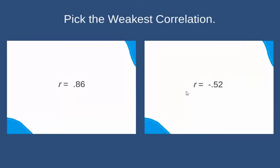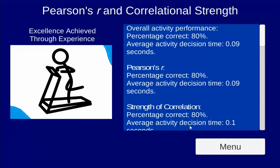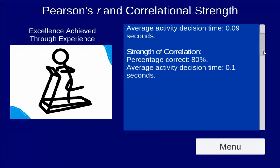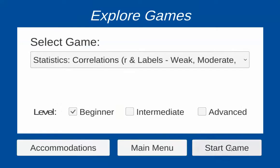After someone's been doing this for a while, it looks a lot more effortless because they become familiar with it. When you're done, you'll see your percentage correct and your average decision time. You can also get detailed results to see how your performance may have differed across the stimuli that were in the game.